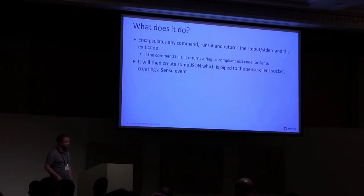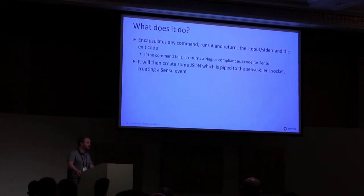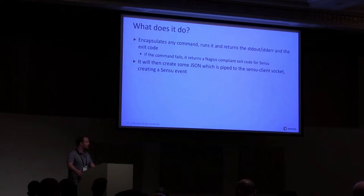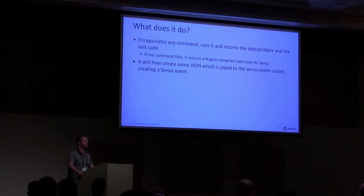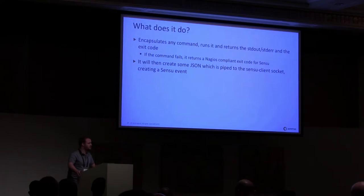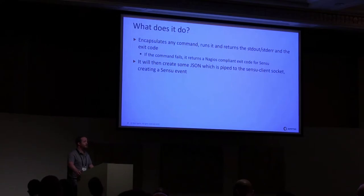So what exactly does Sensu Wrapper do? Basically, it will encapsulate any command that you send to it. It runs the command and then returns the standard out, all the standard error depending on what happened with the command, and then an exit code. Obviously Sensu relies on exit codes — NAGIOS-compliant exit codes. Sensu Wrapper has a bit of logic to make sure you get a NAGIOS-compliant exit code, because some developers like to use random exit codes, like 17. If the command fails, it will create some JSON, which it then pipes to the Sensu socket, and it creates a Sensu event.